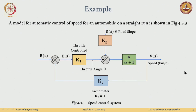Let us start with an example: a model for automatic speed control of an automobile on a straight run. There is a reference speed, a measured speed, and an error signal that decides the throttle position. Disturbances come from road slope — positive or negative. No disturbance means flat road. The car is modeled as a very simple first-order system with one pole, giving the desired speed.